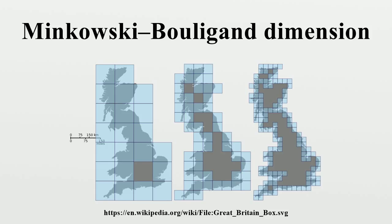The advantage of using balls rather than squares is that this definition generalizes to any metric space. In other words, the box definition is extrinsic — one assumes the fractal space S is contained in a Euclidean space and defines boxes according to the external geometry of the containing space. However, the dimension of S should be intrinsic, independent of the environment into which S is placed, and the ball definition can be formulated intrinsically.